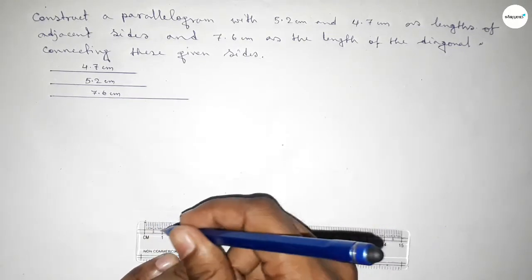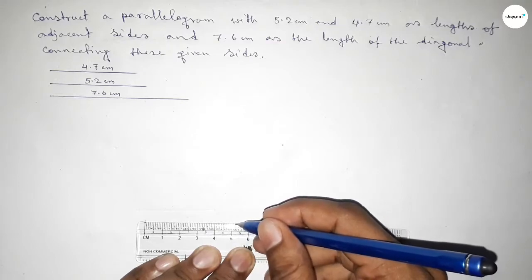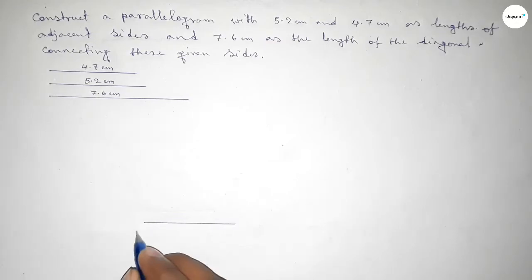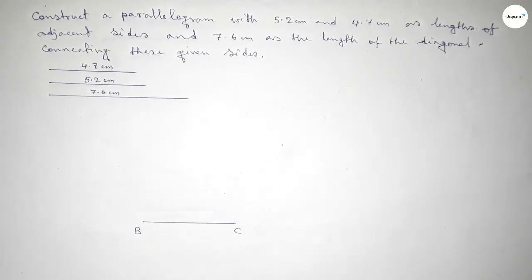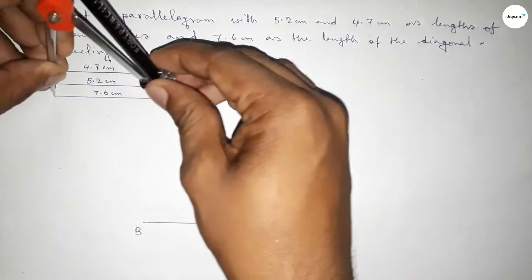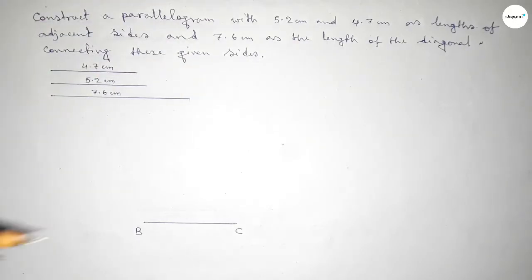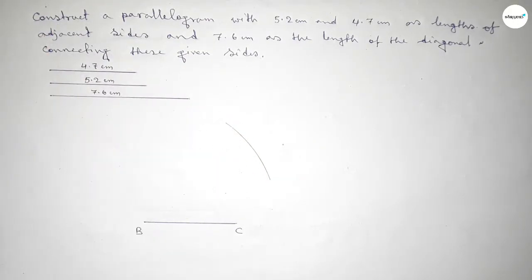First we have to draw a line of length 5.2 centimeter. So this is 5.2 centimeter — taking here point B and here point C. Now taking the length 7.6 centimeter by using compass, putting the compass here, and drawing an arc.